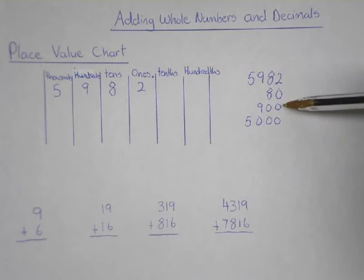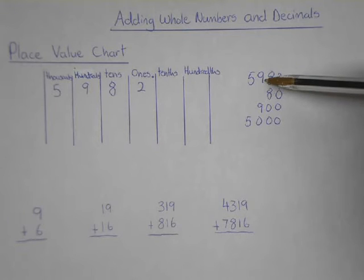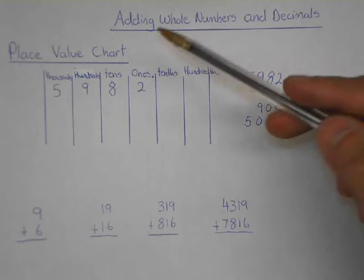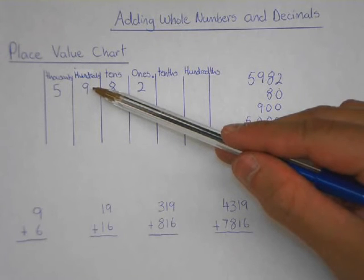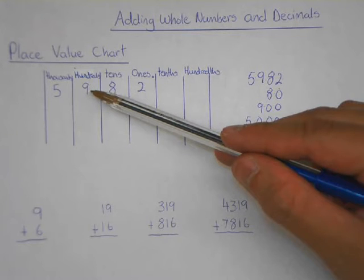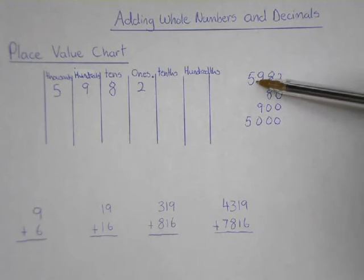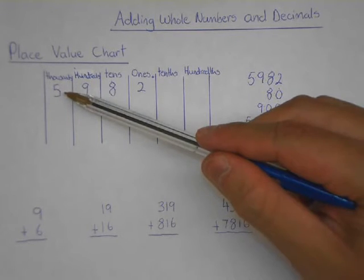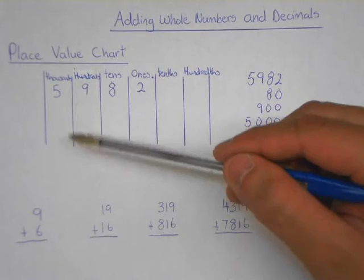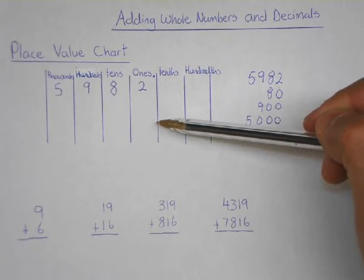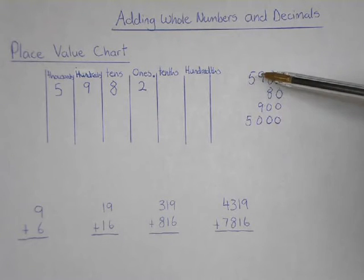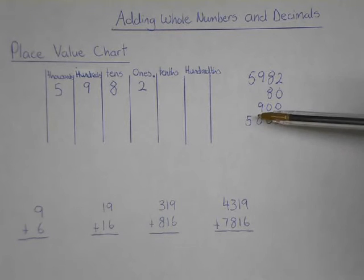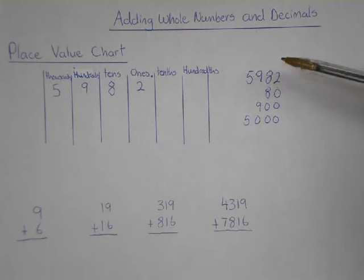The next number is 9, and this doesn't represent 9 — it actually represents 900. So there are 900 little cubes, and we place this into the 100s column. Finally, you have the 5, which represents 1,000s — there are 5 thousands — and that is placed into the 1,000s column. This breaks down the number so you know which digit represents what. If we add these all up: 5,000 plus 900 plus 80 plus 2, we get 5,982.